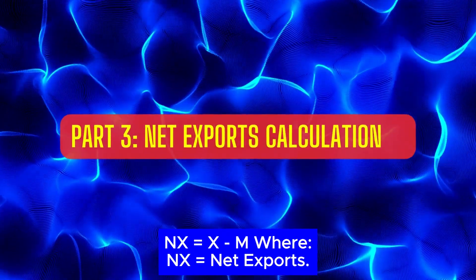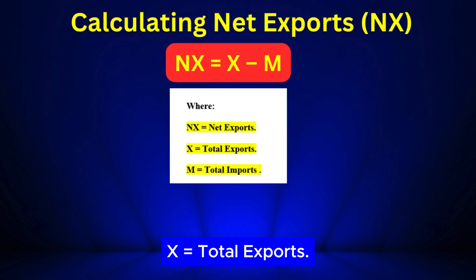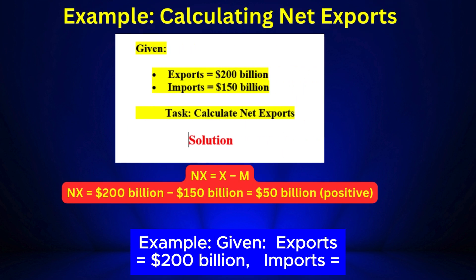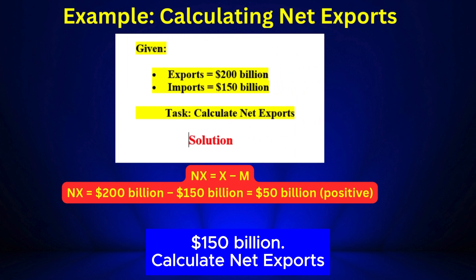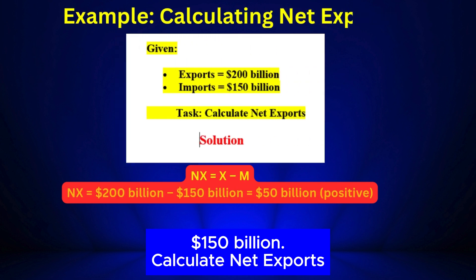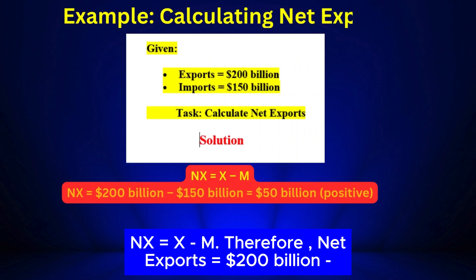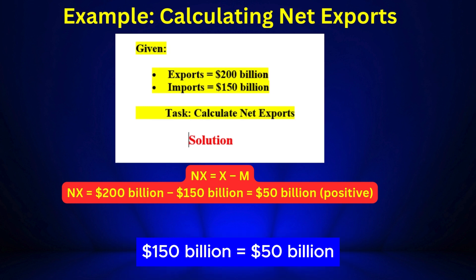Part 3: Net Exports Calculation. Net exports: NX = X minus M, where NX equals net exports, X equals total exports, and M equals total imports. Example: Exports equal $200 billion, imports equal $150 billion. Therefore net exports equals $200 billion minus $150 billion equals $50 billion.